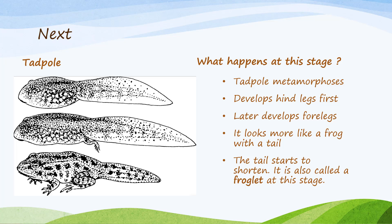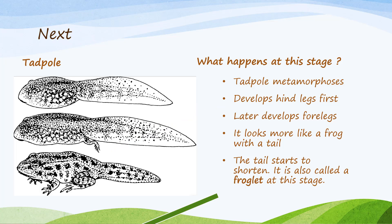Next, what happens at this stage? Tadpoles undergo metamorphosis — they develop hind legs first, then later develop four legs. It looks more like a frog with a tail, and the tail starts to shorten. It is also called a froglet at this stage.